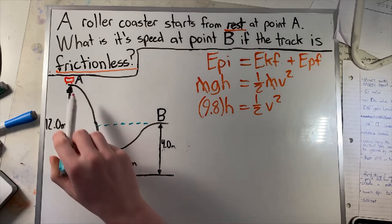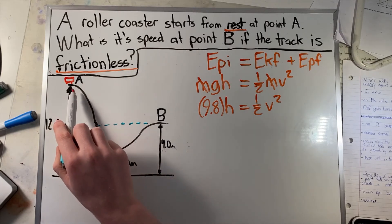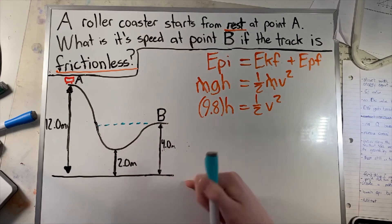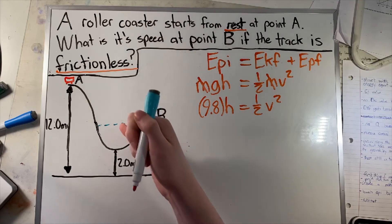What that does is it lowers the potential energy of point A but completely gets rid of the potential energy of point B, because we've essentially moved the ground up four meters. The ground was previously our reference point, but now it's this.